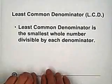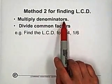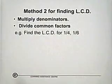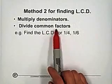For method 2, the first step is multiply denominators, multiply all the denominators. The second step, divide common factors.